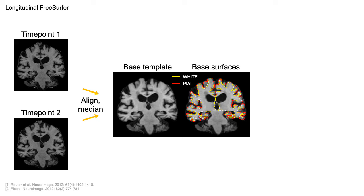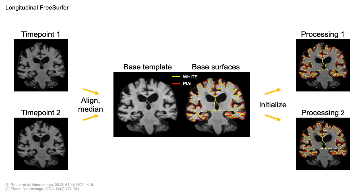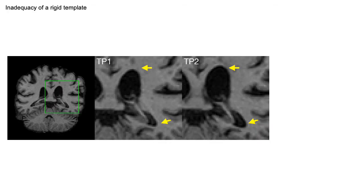This BASE stream is unbiased since its coordinate system is chosen to be equidistant to the time points. In the longitudinal stream, this information is used to initialize the processing of the individual time points. This is a robust and unbiased approach, but what happens in the presence of large anatomical change?